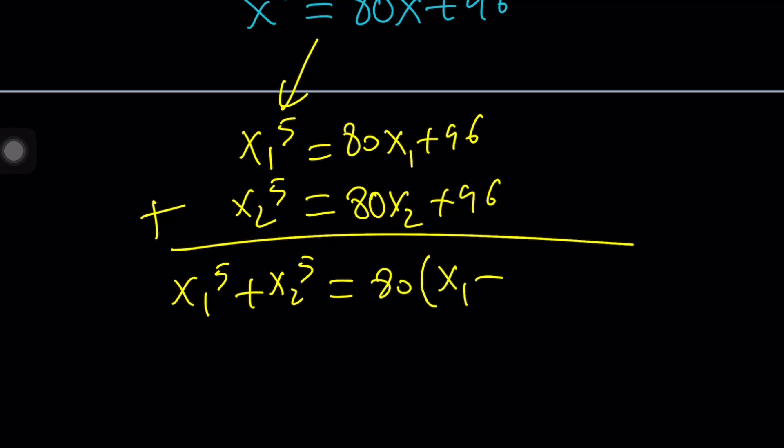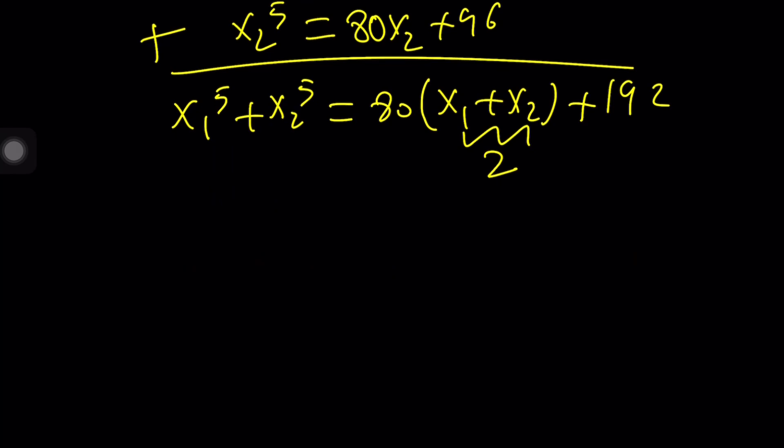And since we know x1 plus x2 by using Vieta's formulas, we can actually evaluate this. In our expression, x1 plus x2 is negative b over a, which is 2. That's going to give us 160 plus 192, which is 352.